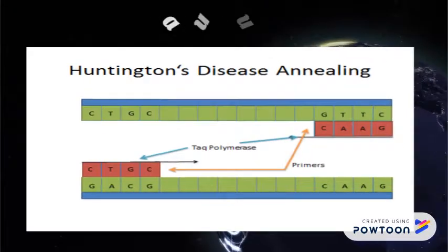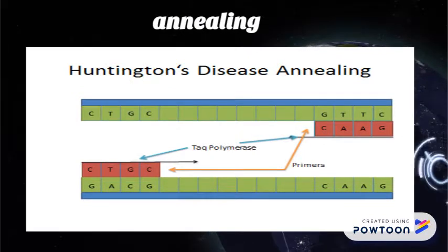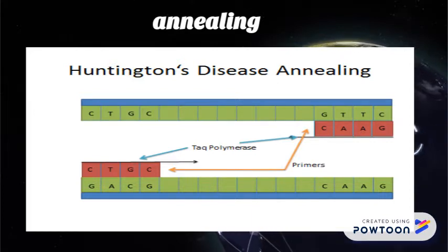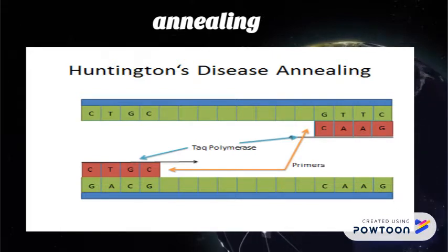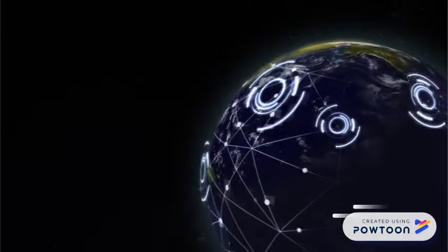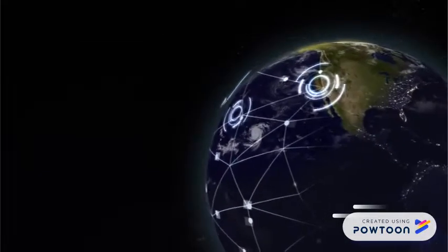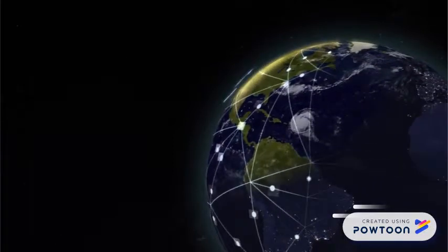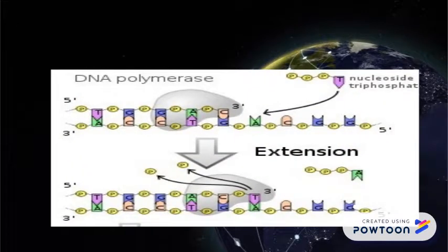The next step is annealing, at a temperature between 55 and 72 degrees Celsius, where the primers bind specifically to complementary sequences of both strands of the DNA template. The primers are designed to bracket the region targeted for amplification. The optimal annealing temperature for a particular primer pair can be determined experimentally by testing a range of temperatures around three to five degrees lower than the lowest melting temperature of the two primers.